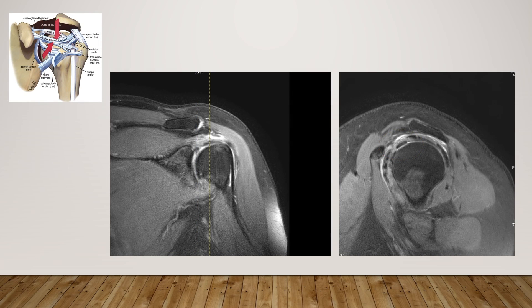The middle part of the coracohumeral ligament is the ligament area between the lateral edge of the coracoid process and the greater tubercle's anterior border. On the coronal image, it belongs to the outer side of the lateral edge of the coracoid process and the middle of the femoral head. On the sagittal image, the middle coracohumeral ligament is located posterior-inferior to the coracoid process and anterior-superficial to the bicep tendon.